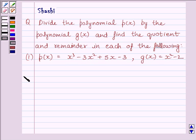Let us now start the solution. Clearly we can see, dividend given to us is equal to P(x), or we can say, dividend is equal to x³ - 3x² + 5x - 3.